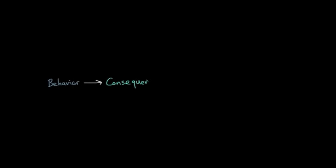Behaviors have consequences. And in terms of operant conditioning, there are two main types of consequences: reinforcement and punishment.